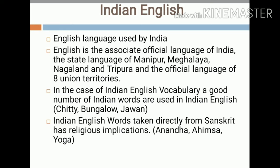English is the state language of Manipur, Meghalaya, Nagaland, and Tripura, and the official language of eight union territories. In the case of Indian English vocabulary, a good number of Indian words are used in Indian English — for example, 'chitti,' 'bungalow,' 'jawan,' etc. are Indian-origin words used in English. Indian English words taken directly from Sanskrit have religious implications; for example, 'Ananda,' 'Ahimsa,' and 'Yoga' are words derived from Sanskrit with religious implications.